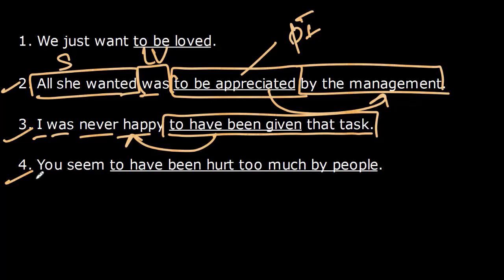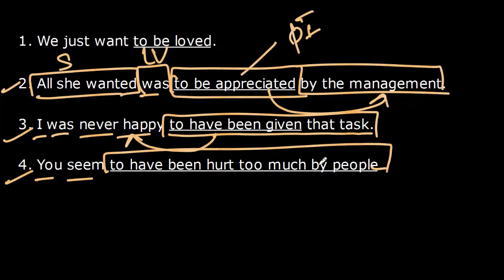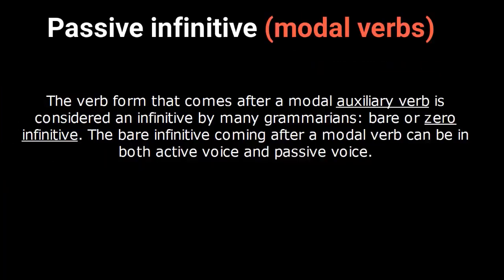Last example: 'You seem to have been hurt too much by people.' Here 'you' is the subject, 'seem' is the verb, and 'to have been hurt' is the perfect passive infinitive. The doer is 'people.' The full infinitive phrase is 'to have been hurt too much by people.'